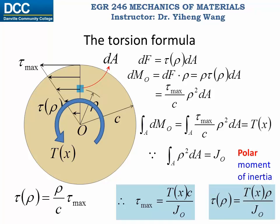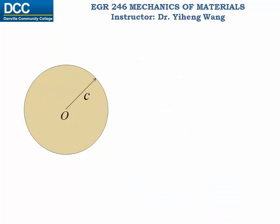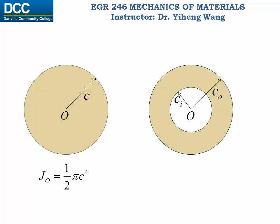The shear stress at any arbitrary rho position equals Tx times rho over J_O, and that is known as the torsion formula. For a solid circle with radius c, the polar moment of inertia about the center is one-half times pi times c to the fourth power. For a ring with outer radius c_O and inner radius c_I, the polar moment of inertia equals one-half times pi times (c_O to the fourth power minus c_I to the fourth power). Review statics if you are not sure what polar moment of inertia is.